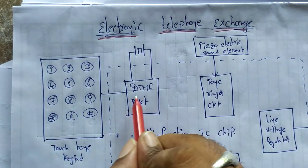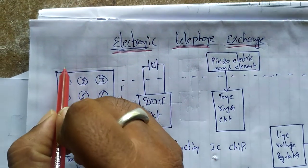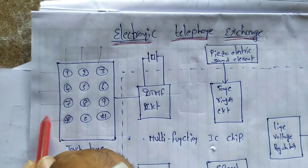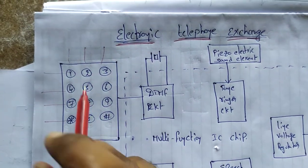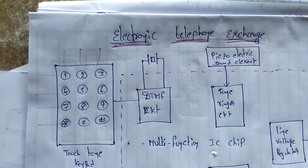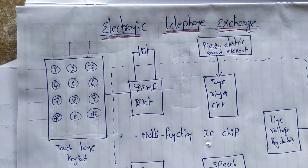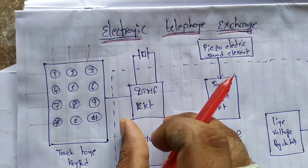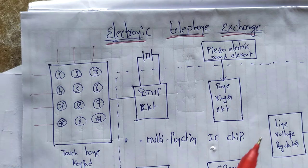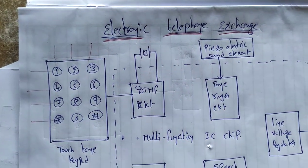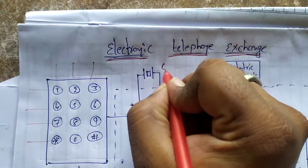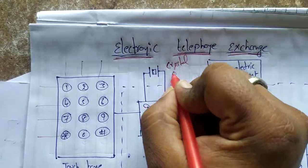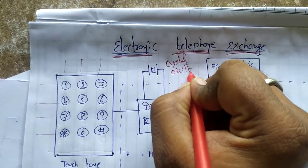DTMF is a dual-tone multi-frequency circuit. DTMF uses a crystal oscillator to generate its frequencies.